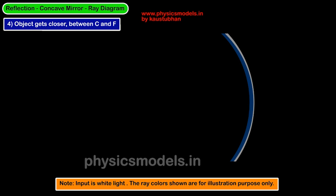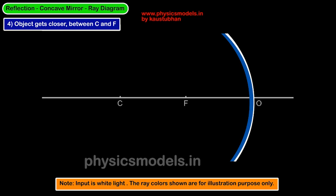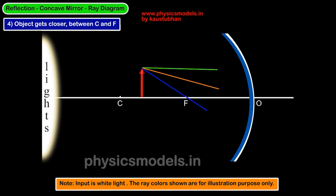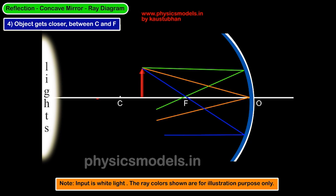Next, bring the object a little more closer, between C and F, and see what happens. Draw an arrow somewhere in between C and F and do the same thing as before. The green ray parallel to the principle axis goes through F. The orange ray reflects equally. The blue ray goes through F and goes parallel to the principle axis, and they all meet. You get an image which is real, inverted, and enlarged.